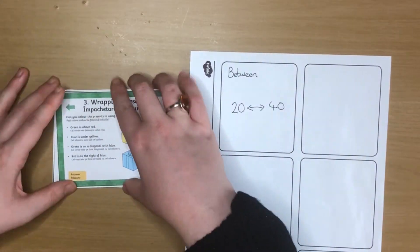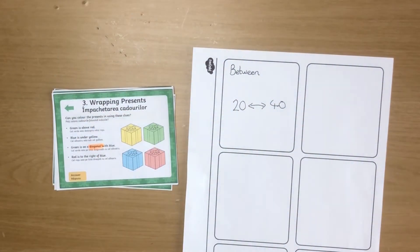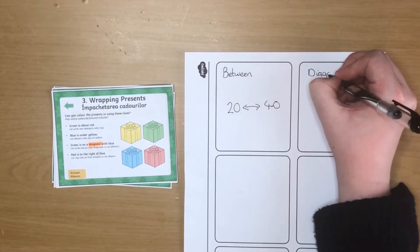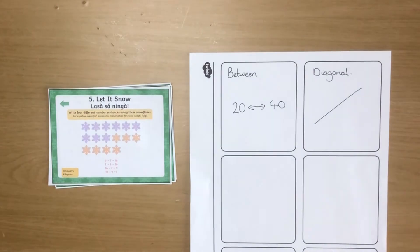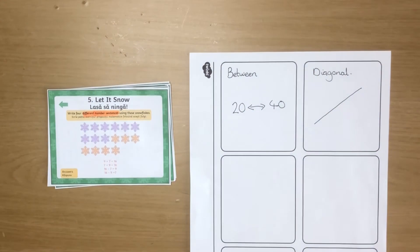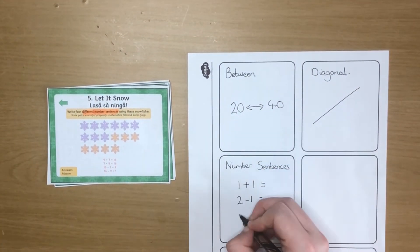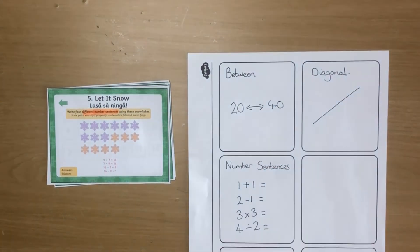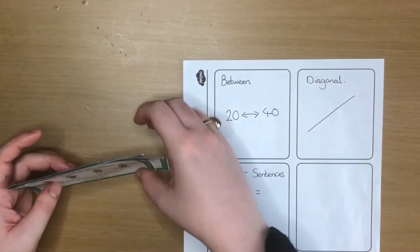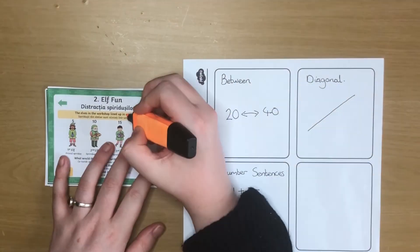Encourage your child to highlight any unknown vocabulary and use the translation to help them understand. They could then create their own visual maths dictionary to refer back to.